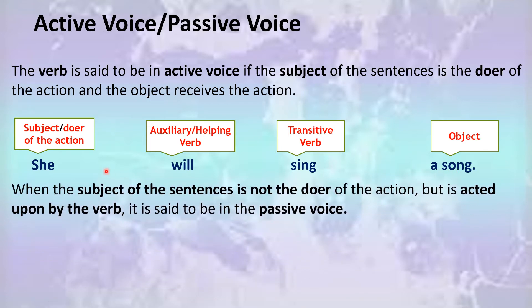The direct object in this sentence is 'a song.' When the subject of the sentence is not the doer of the action but is acted upon by the verb, it is said to be in the passive voice form.